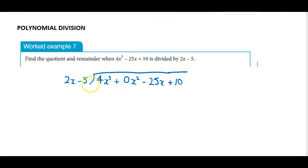Now how it works is like this. We try and think of a number to multiply 2x by to get 4x³. So that would be 2x² and we keep that in the x² column. Then we multiply this through the divisor. 2x² times 2x gives us 4x³.